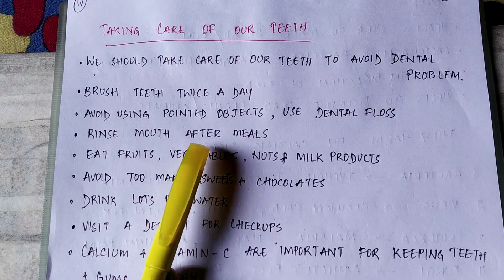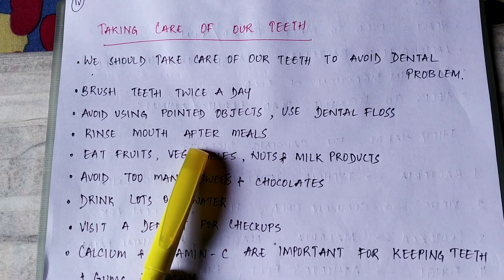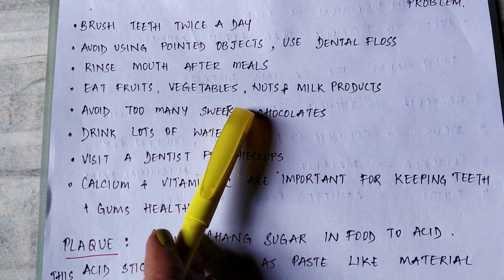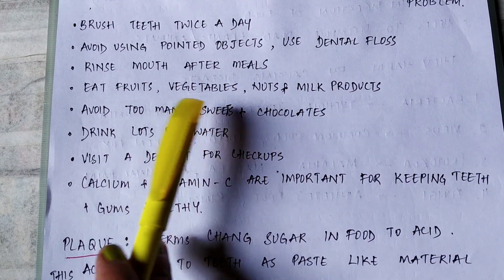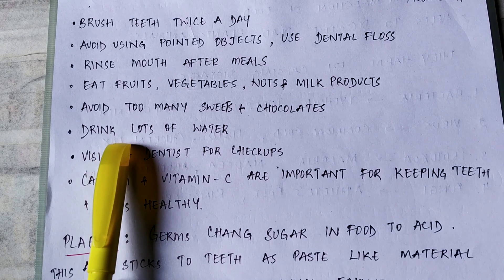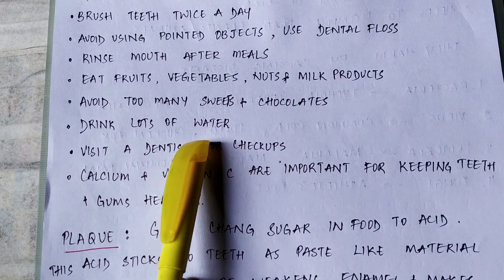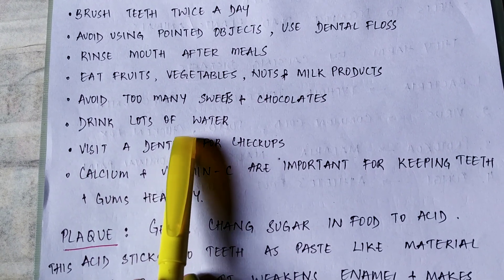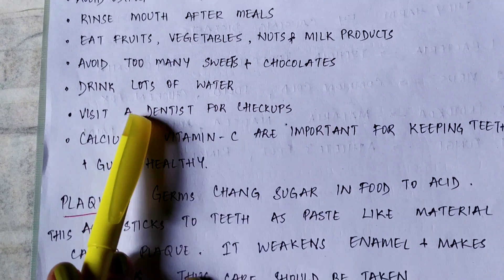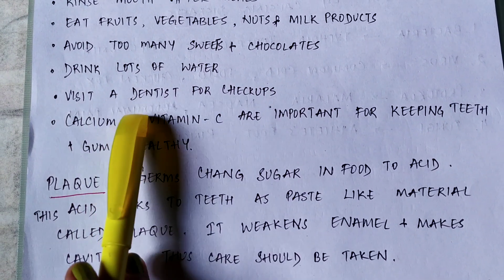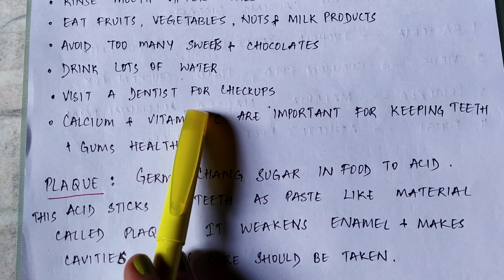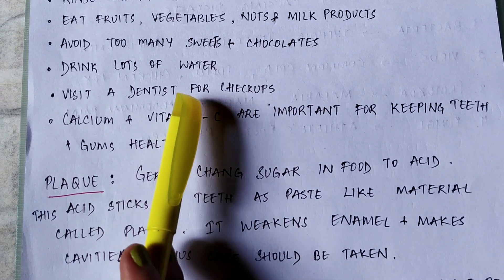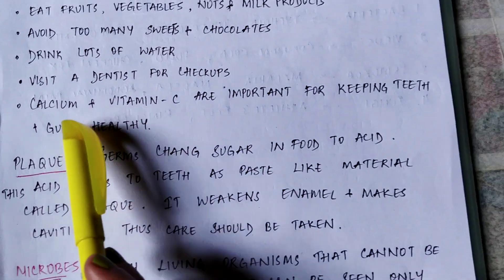Rinse and clean your mouth with water after every meal. Eat fruits, vegetables, nuts, and milk products regularly. Avoid too many sweets like chocolates. Drink a lot of water. Visit a dentist for checkups — try to go frequently for your tooth checkup.